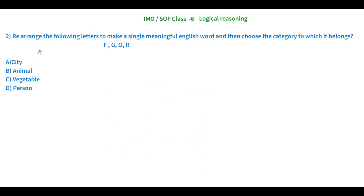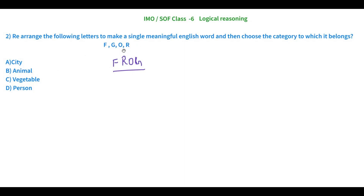The second question: rearrange the following letters to make a single meaningful English word, then choose the category to which it belongs. The letters given are F, G, O, R. Does it form a city? No. Rearranging the letters gives us FROG — F, R, O, G. Frog is an animal. It's not a vegetable or a person, so the right answer is animal.